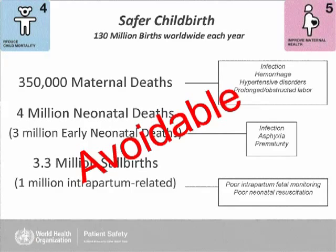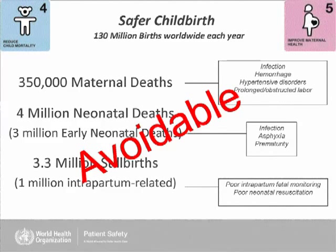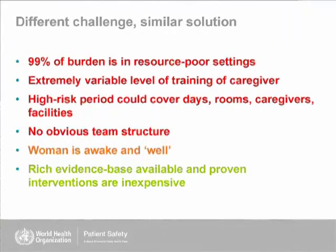Our challenge was MDGs four and five. We know we're having all this mortality and we know the causes. What's really sad is we have proven interventions that are inexpensive, and WHO has been trying to deliver these effectively for decades, but has been totally unable to get them to the bedside reliably. It's a slightly different challenge to the safe surgery checklist — 99% of our burden of disease is in the developing world. It has to be very succinct — these caregivers don't have excess time, and we can't have intense supply requirements.